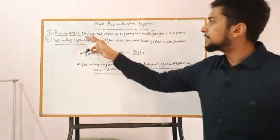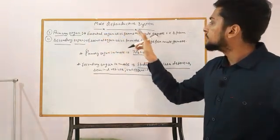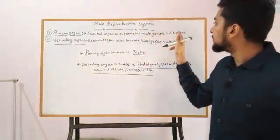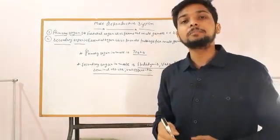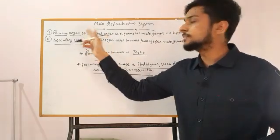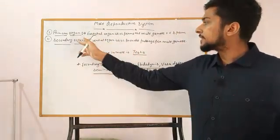So we will learn about what is primary organ. Essential organs which form the male gamete, that is sperm, or simply we can say that the gamete forming organs are called primary organ.